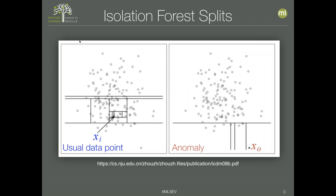Another graphical interpretation: decision trees make splits perpendicular to the axis. On the left we have all the splits needed to isolate a usual data point — many black lines, each being a split. On the right, an anomaly needs much fewer splits, so it would be higher in the tree.